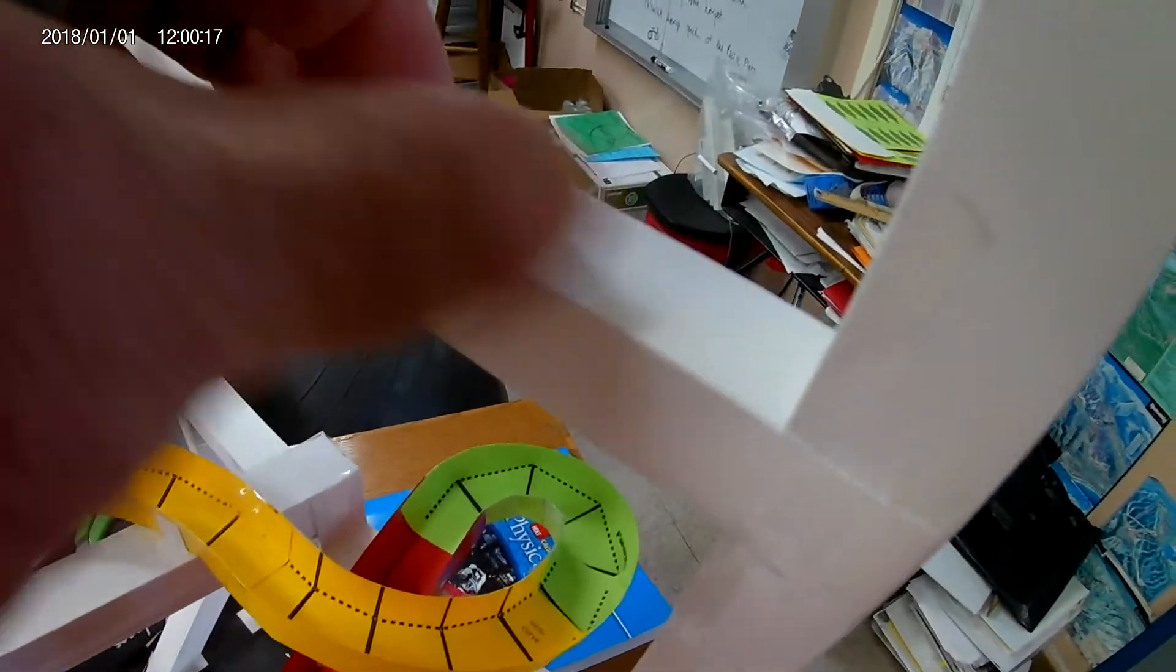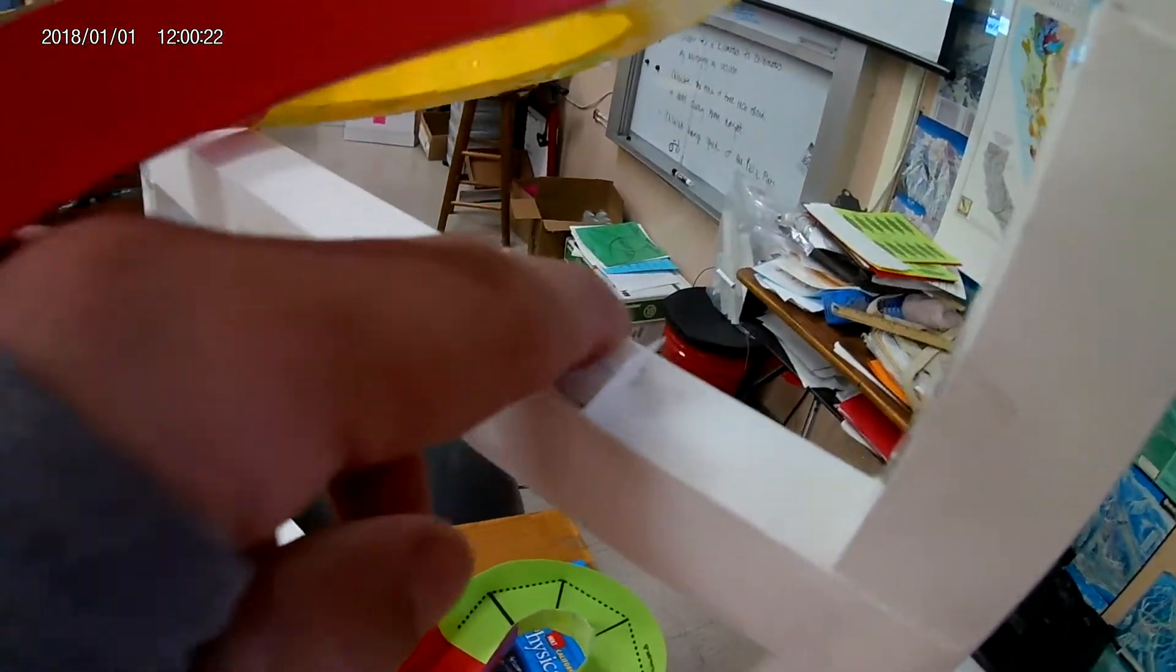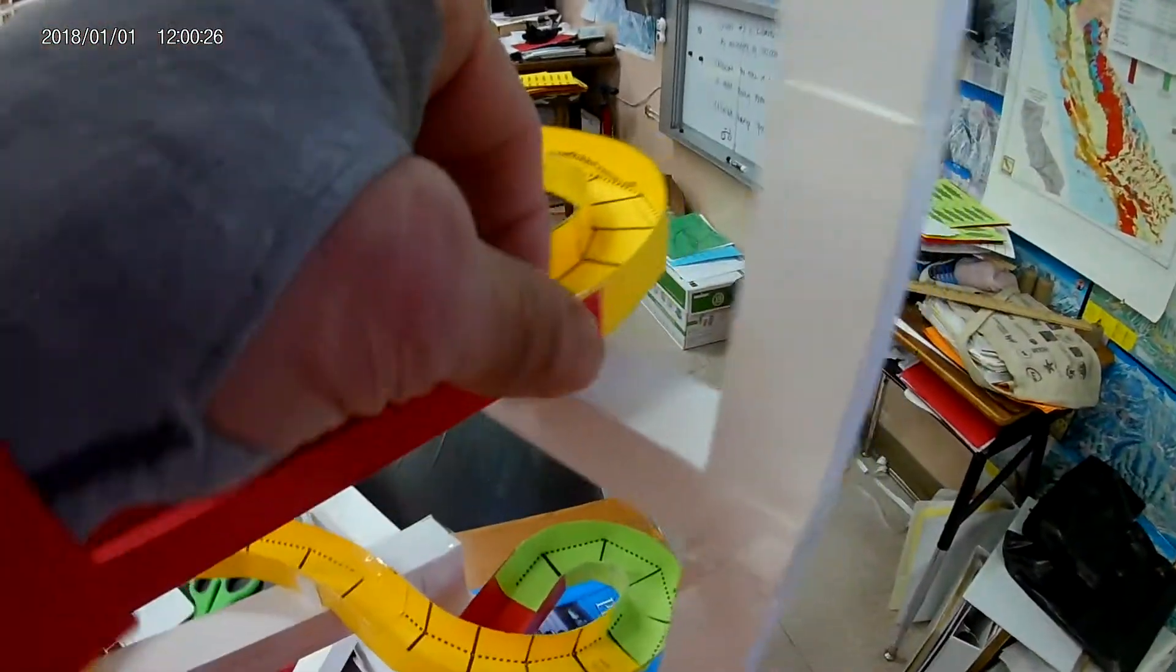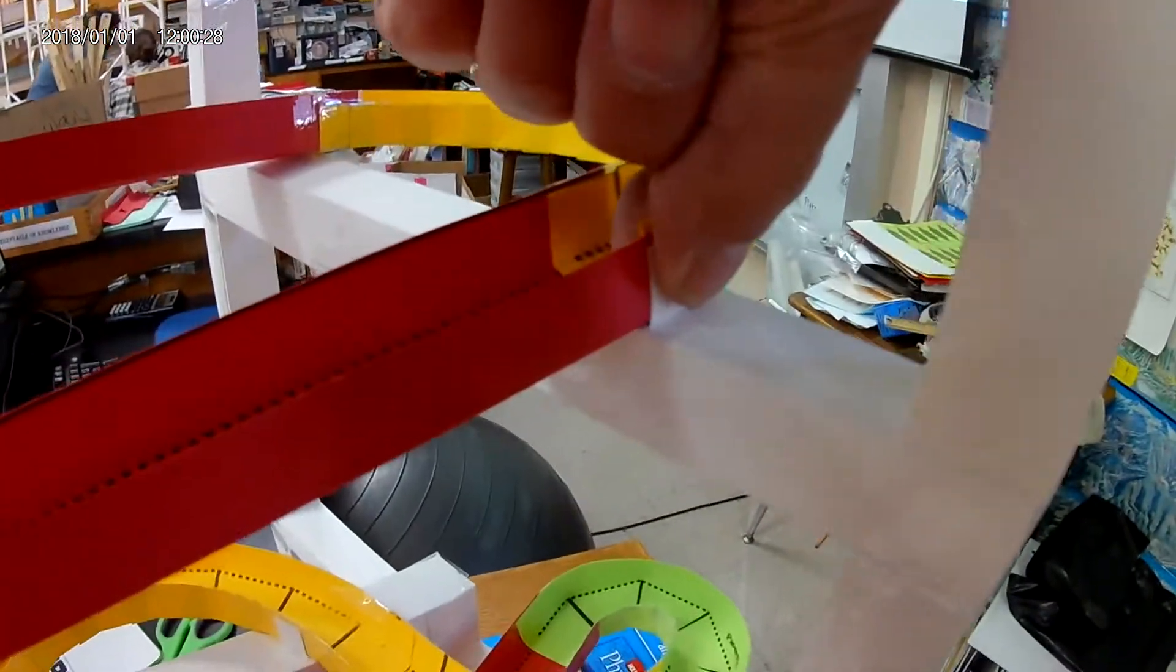And then what you're going to do, it looks like a little teeny band-aid. You're going to tape the center section to, in this case, to wherever it is on your superstructure. Then the ears stick up, and you're going to take a piece of tape, tape it there, and tape it there.